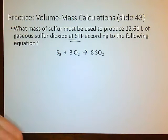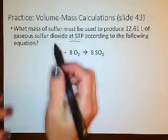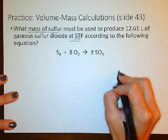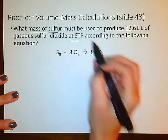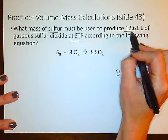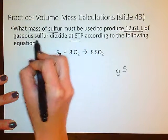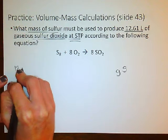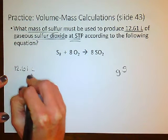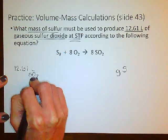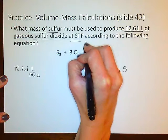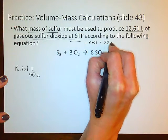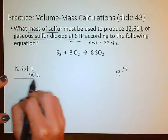Let's take another look at a gas stoichiometry problem. It's asking us for the mass of sulfur, so we're looking for grams of sulfur that must be used to produce 12.61 liters of sulfur dioxide. That's the given starting information we're going to write down. Notice that it says STP — and that's important because we can use 1 mole equals 22.4 liters in this conversion.